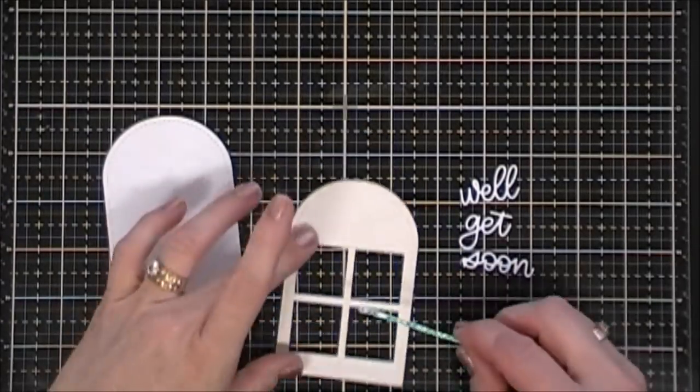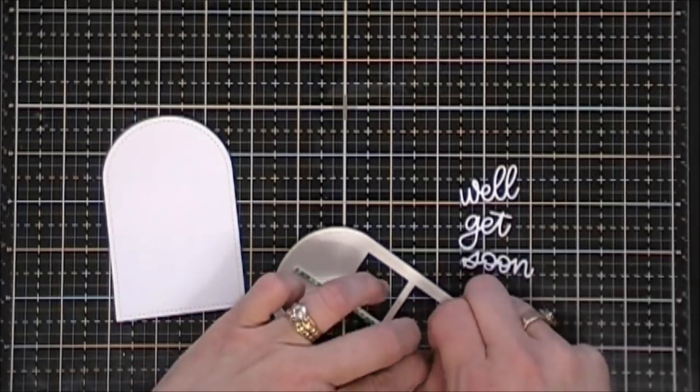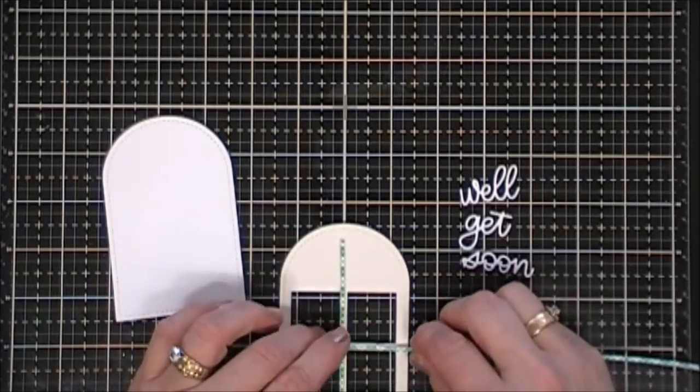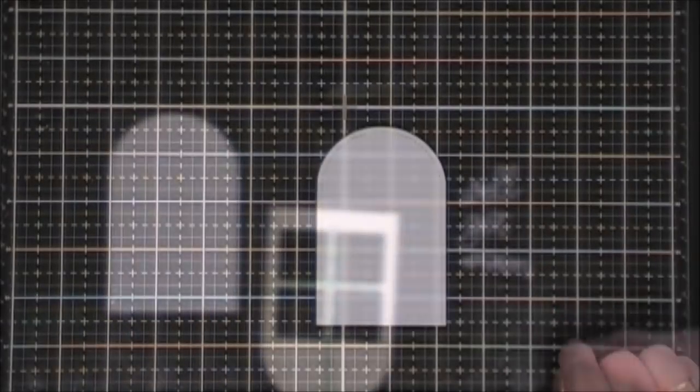I'm going to flip over my window pane, add some foam tape right behind it. We'll set our sentiment aside and our front window frame aside. We're going to work on our background.